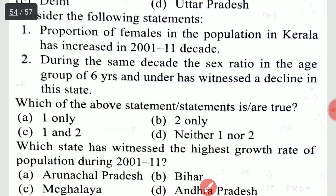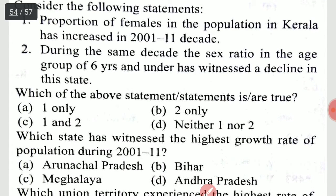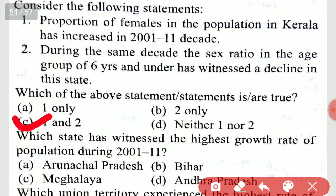Consider the following statements: the proportion of females in the population in Kerala has increased in the 2001 to 2011 decade; during the same decade, the sex ratio in the age group of six years and under witnessed a decline in the state. The correct judgment is option C — both 1 and 2 are correct.